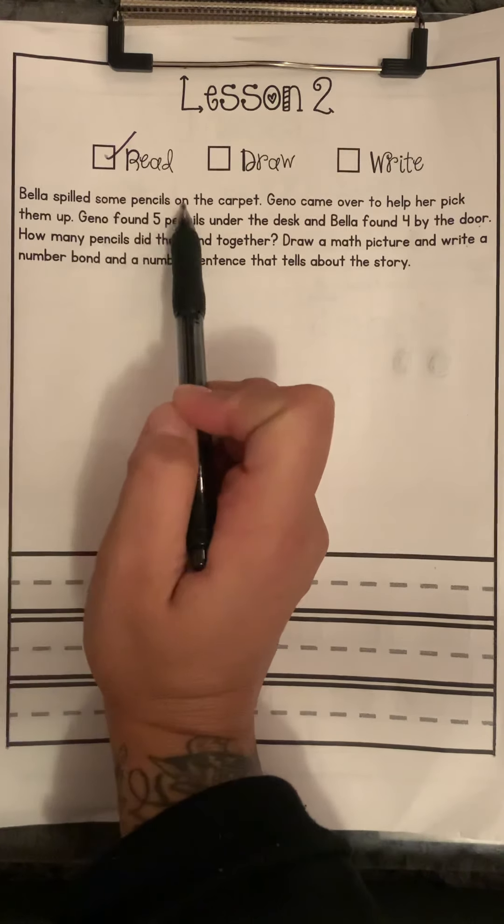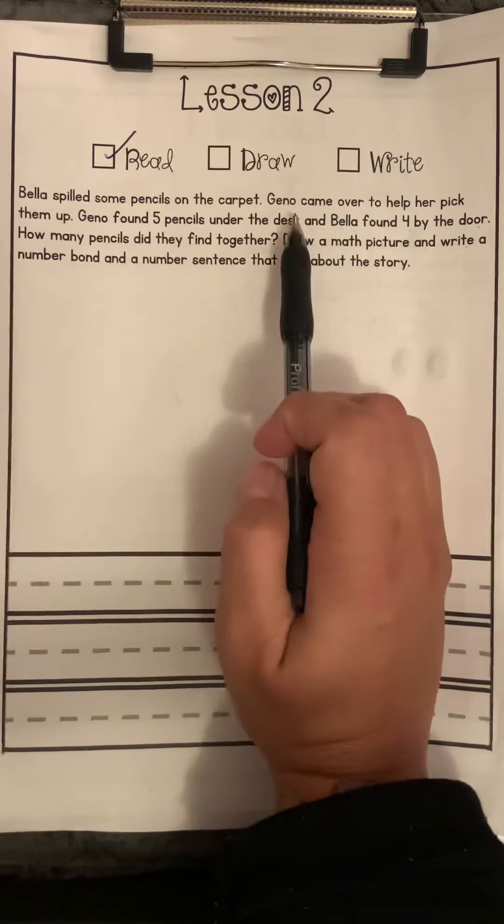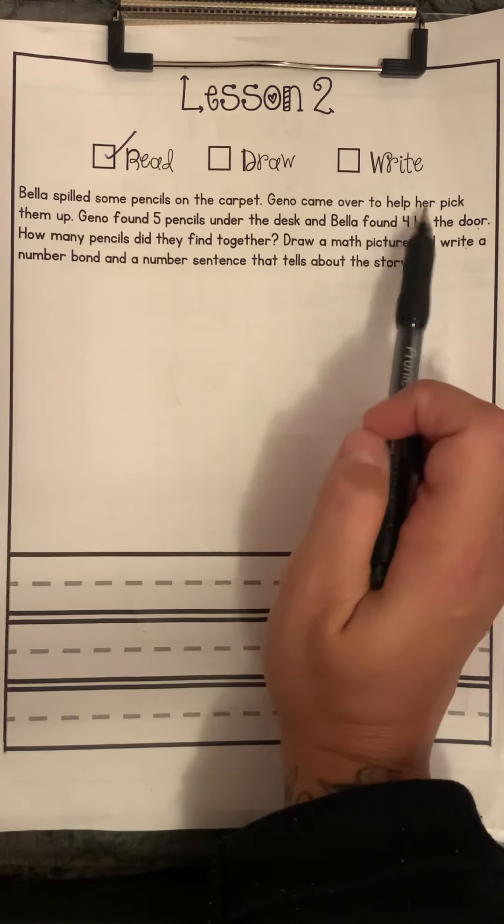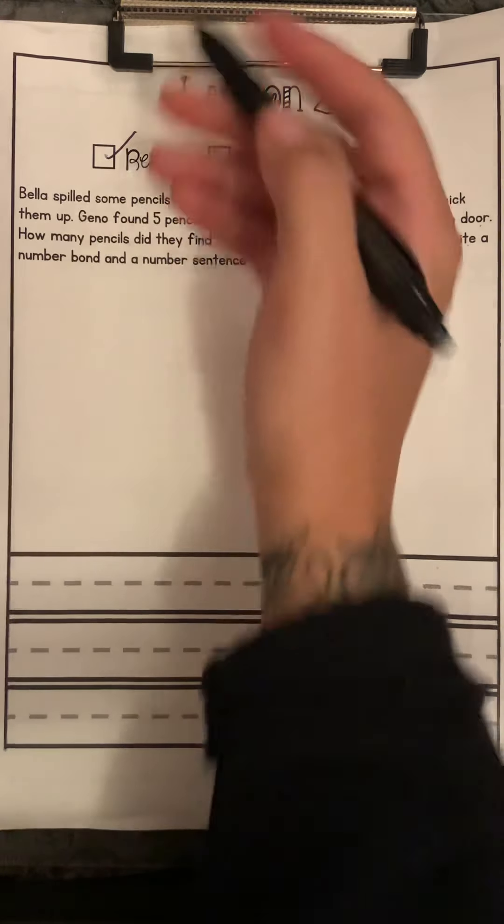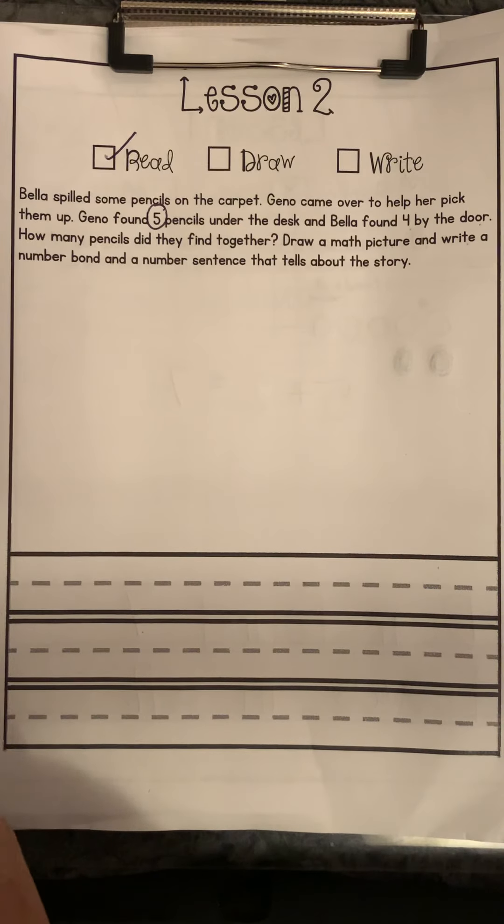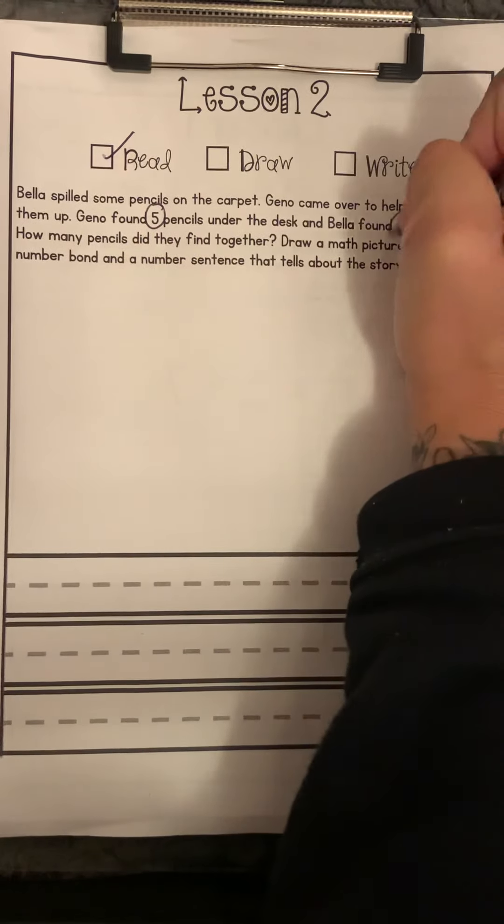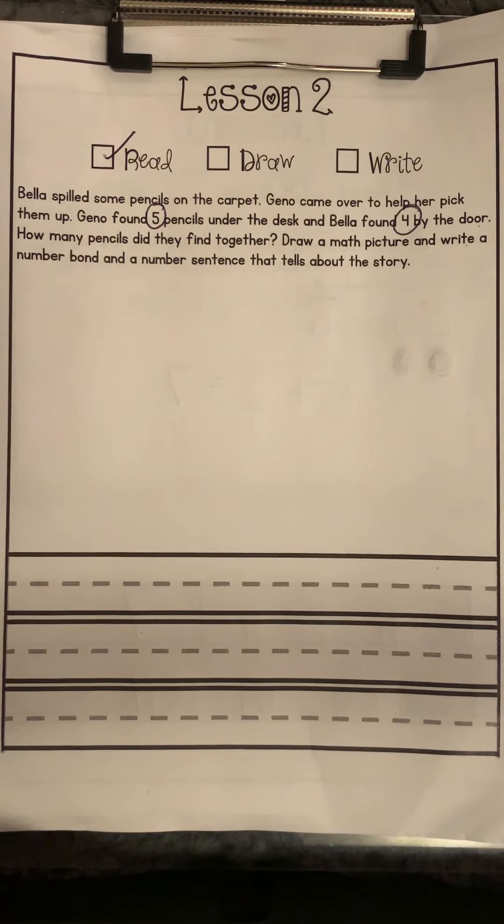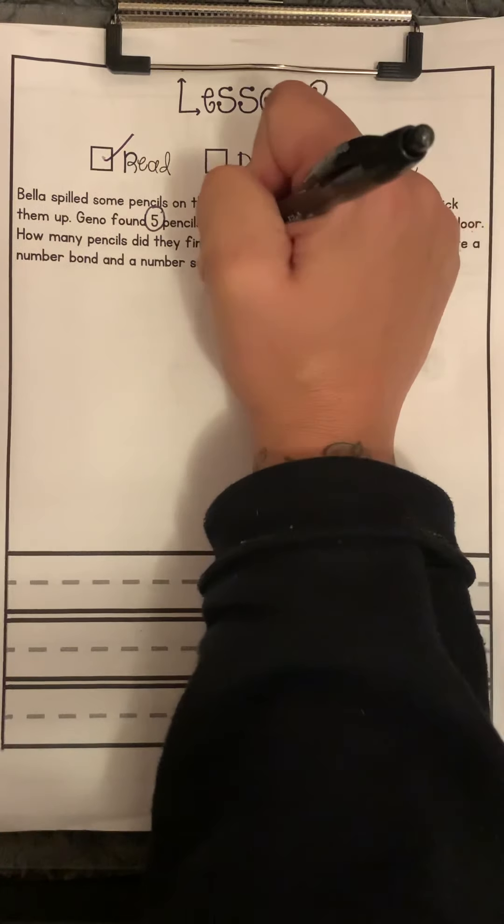Bella spilled some pencils on the carpet. Gino came over to help her pick them up. Gino found five pencils under the desk, and Bella found four by the door. How many pencils did they find together?